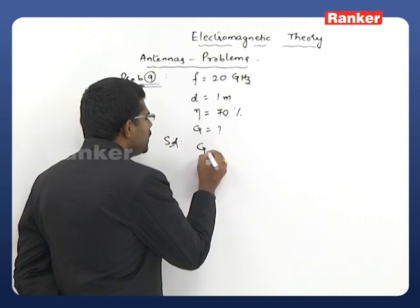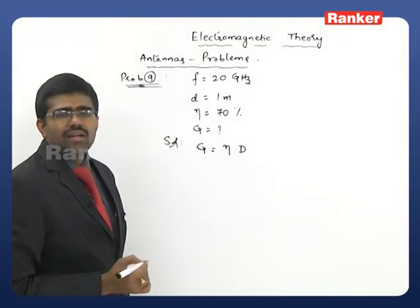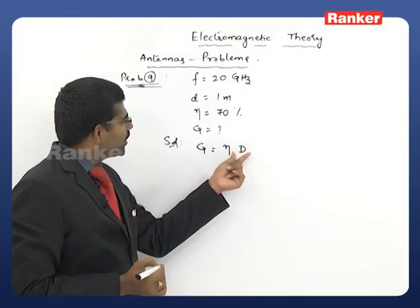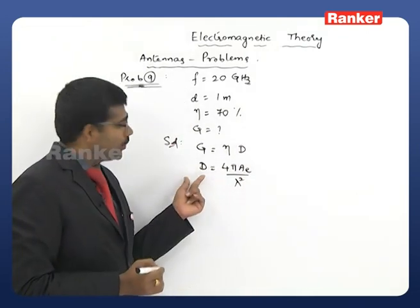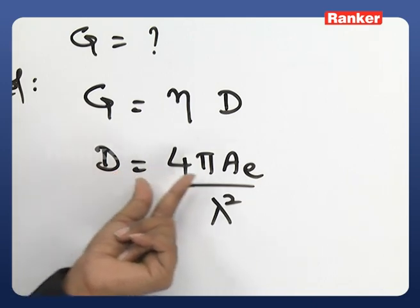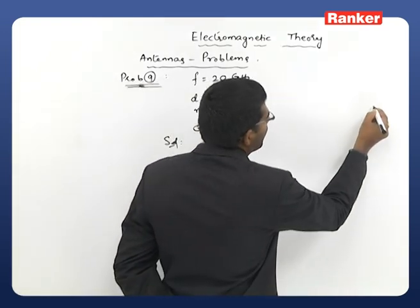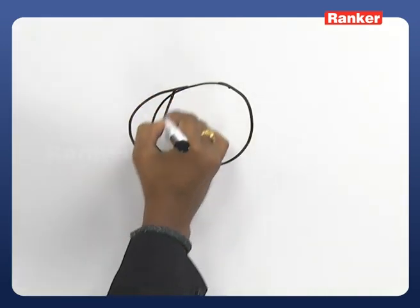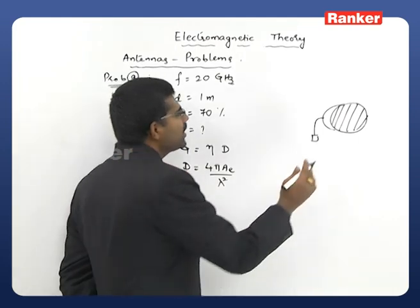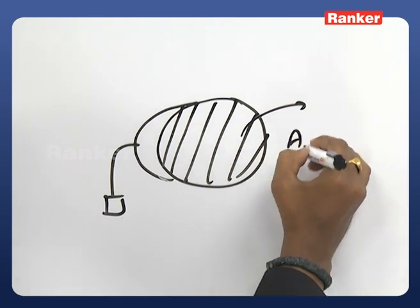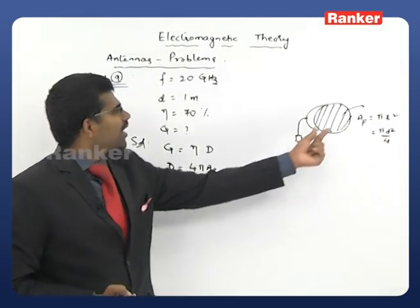G = η × D, where η is antenna efficiency. Directivity D = 4πA_e/λ². Assuming 100% aperture efficiency, A_e = A_p = πD²/4. For D = 1 m: A_p = π/4. λ = c/f = (3×10⁸)/(20×10⁹). G = 0.7 × (4π × (π×1²/4)) / λ².